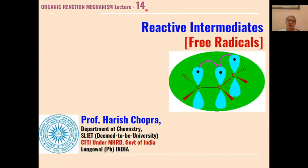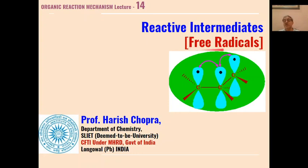This is our 14th lecture on organic reaction mechanism. We are doing reaction intermediates, and in this series we have already done carbocations, carbanions, then carbenes, nitrenes. The last of our intermediates to discuss is free radicals and their reactions. In the present lecture we will be discussing the basics of free radicals, and in the next lecture we will be discussing the reactions of free radicals.